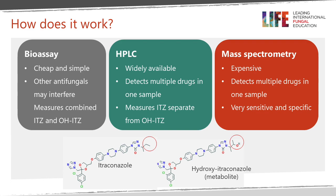With respect to itraconazole, which is often measured by bioassay, both the native itraconazole and its primary metabolite hydroxy-itraconazole are bioactive and can diffuse through agar at different rates, producing effectively a dual result. Therefore you get different results with bioassay than with HPLC or mass spec for itraconazole. HPLC is widely available, many drugs are measured this way, and it can detect multiple drugs in a single sample and measure itraconazole separately from the metabolite.